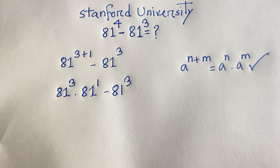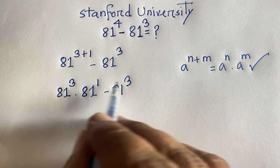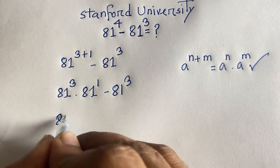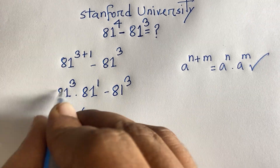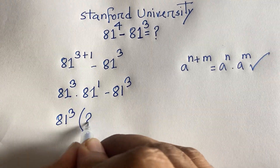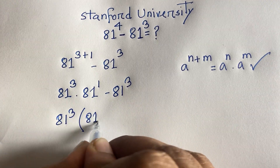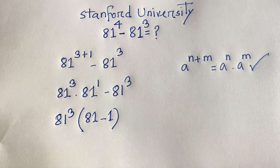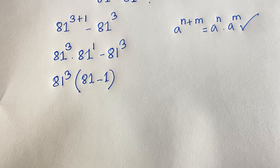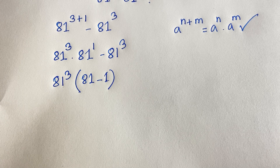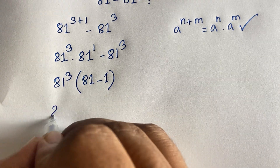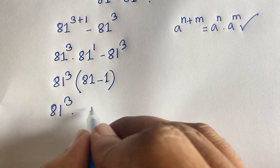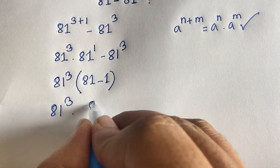Now you can see easily that 81 to the power 3 is common. Factoring it out: 81 to the power 3 times (81 minus 1). That division gives 81, and this one gives 1. So we have 81 to the power 3 times (81 minus 1), which equals 81 to the power 3 times 80.